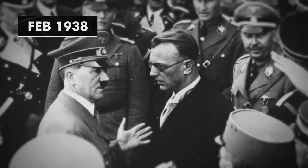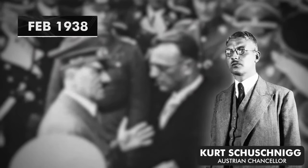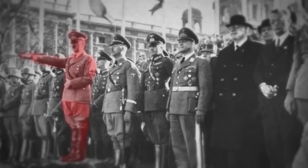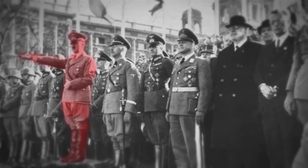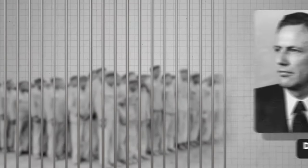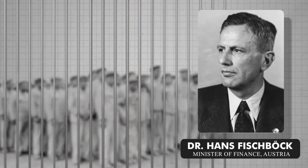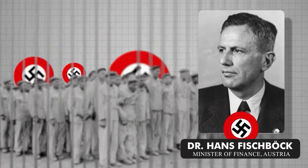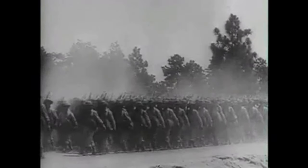In February 1938, Hitler met Austrian Chancellor Kurt Schuschnigg. He was forced into signing an agreement that allowed Hitler to place pro-Nazi people in the Austrian government. The Austrian government was infiltrated by appointing his own people, for example Dr. Hans Fischbach, who was supposed to be the new finance minister of Austria. He was a Nazi, and the other Nazis who were in jail were set free by him. Within a month, things were out of control.